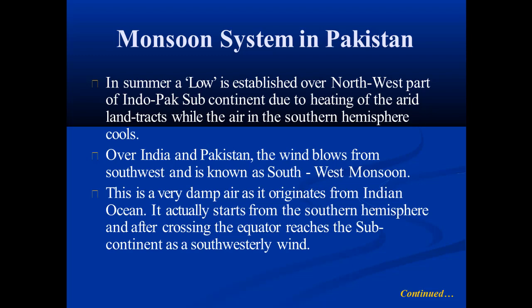Over India and Pakistan, the wind blows from the south-west and is known as the south-west monsoon. In summer, a low is established over the north-west part of the Indo-Pak subcontinent due to heating of the arid land tracts, while the air in the southern hemisphere cools. This is very damp air as it originates from the Indian Ocean, starting from the southern hemisphere and after crossing the equator, reaching the subcontinent as south-westerly winds.